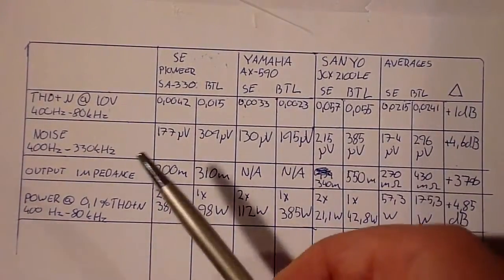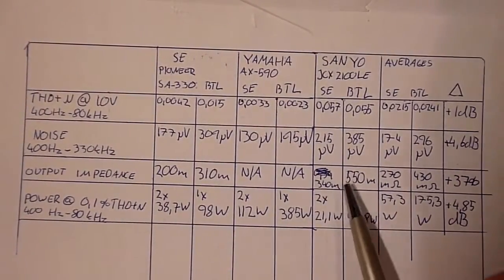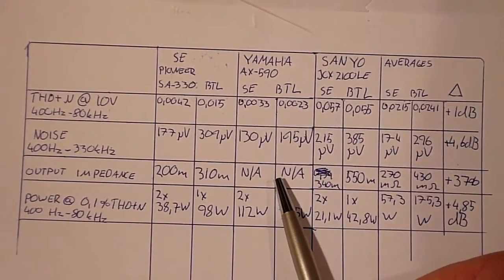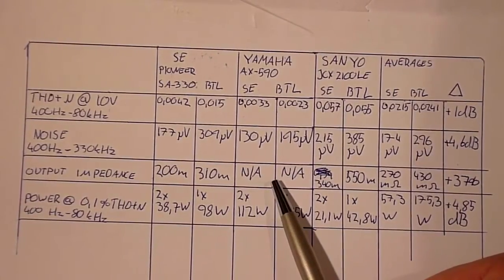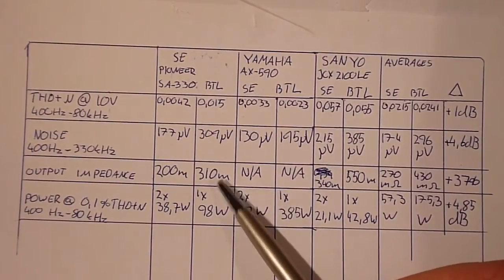Moving on. The output impedance test I did only on the Pioneer and the Sanyo, because the Yamaha has a mad damping factor of well over pretty much a thousand, and I can't accurately measure it at the resolution required here. So the averages are only for the Pioneer and the Sanyo.